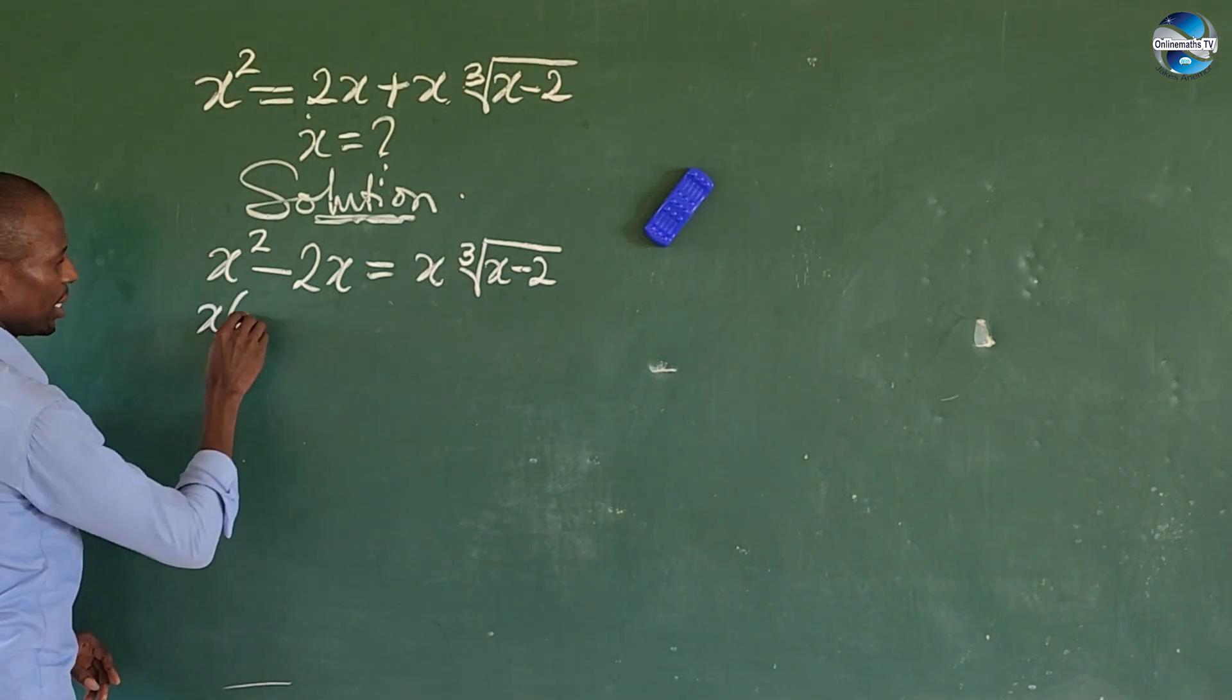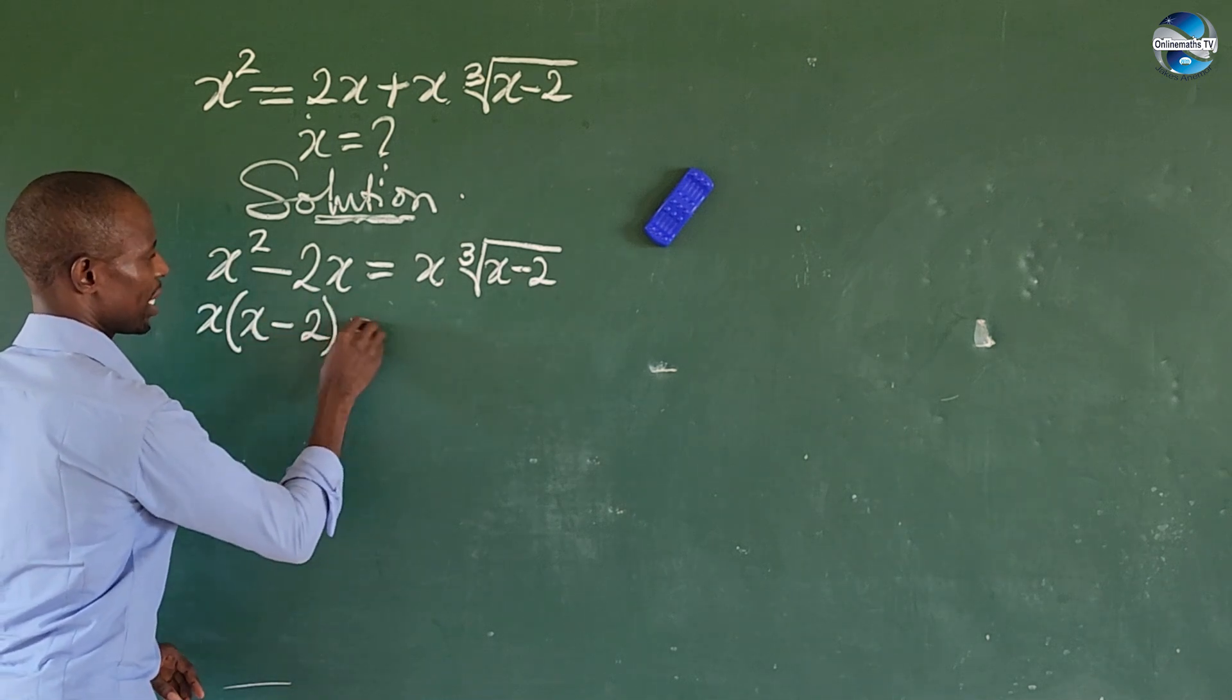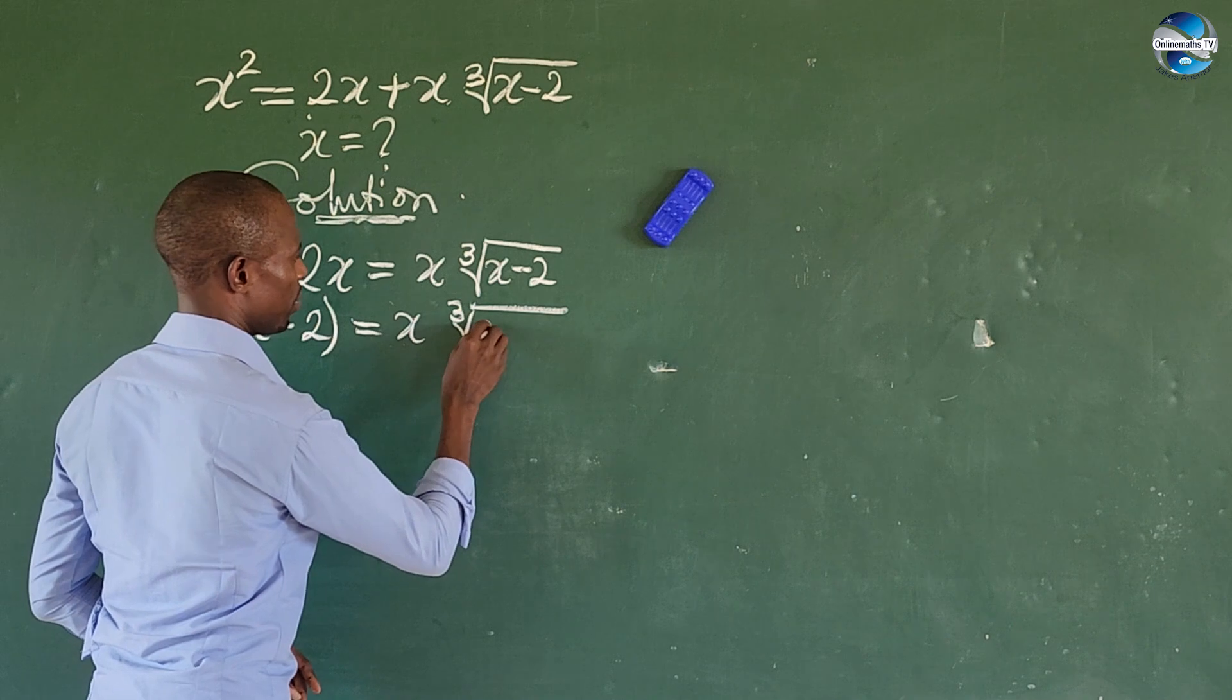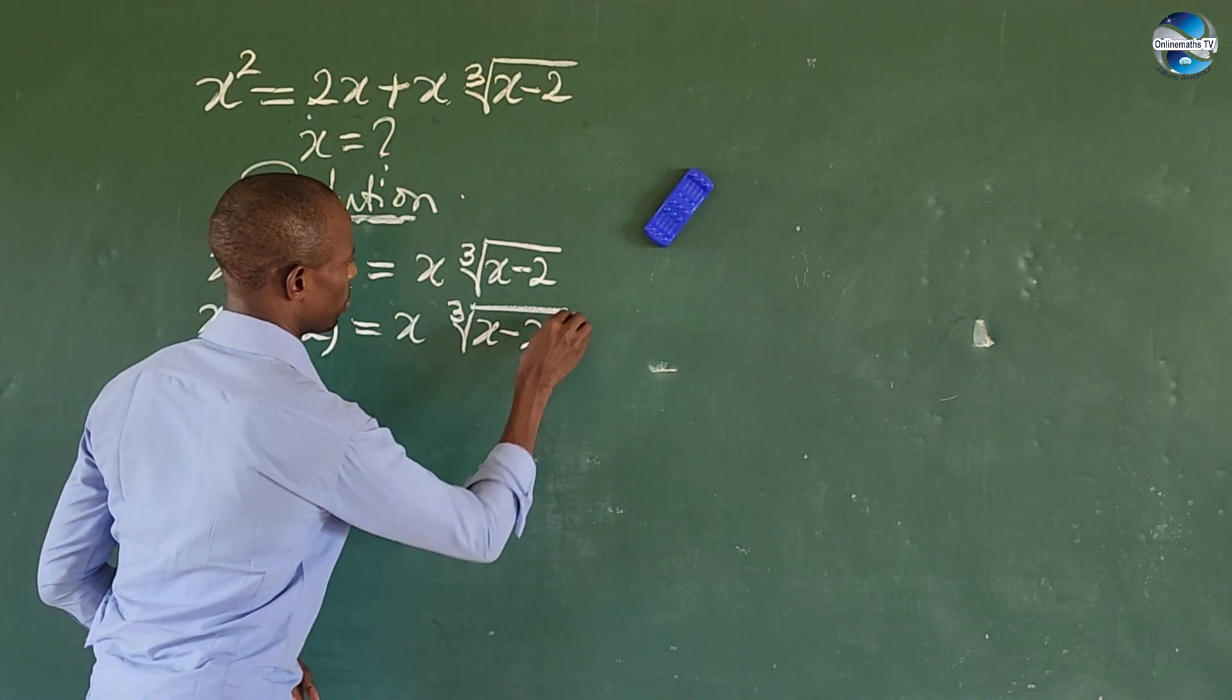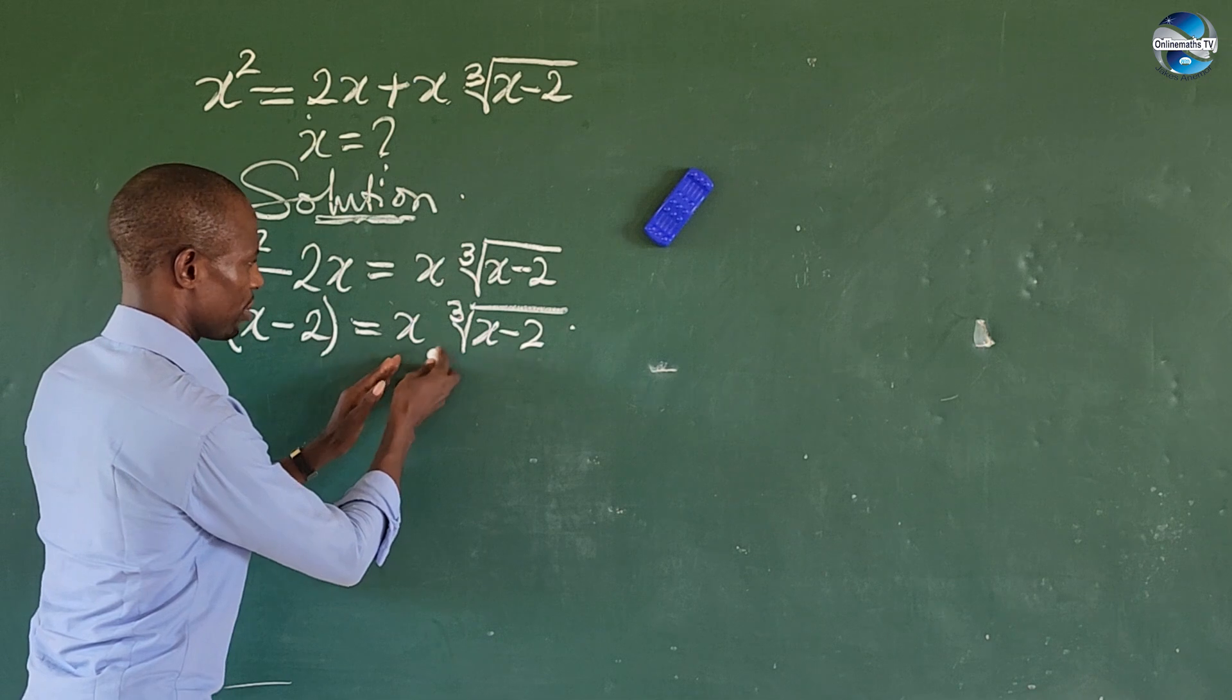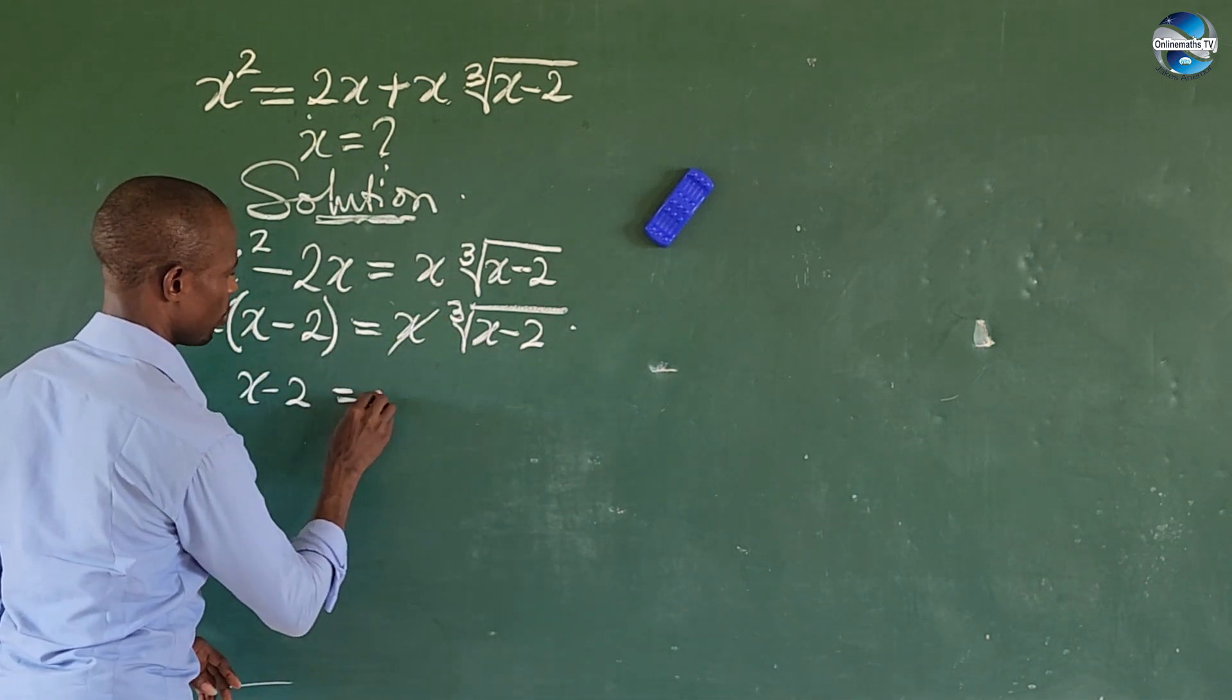This now gives us: if we use x to divide this, we're left with x; x to divide this, minus 2 in brackets equals x into the cube root of x minus 2. It is easy now. x is out here, x is out here, so these two leave the system.